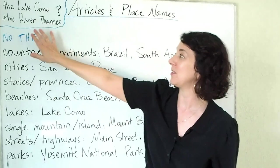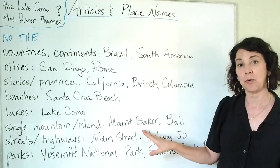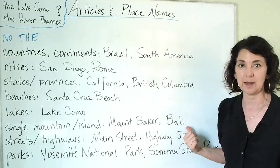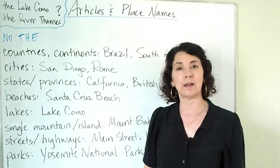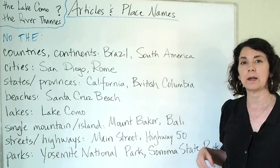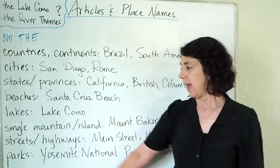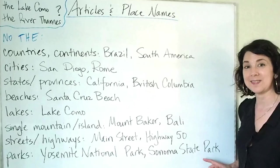No 'the' with single mountains or single islands — for example Mount Baker, or Bali, the name of an island in Indonesia. For names of streets and highways, no 'the': Main Street, Highway 50. There are some exceptions — highways named after a person can sometimes use 'the' — but usually no 'the' for streets or highways. Finally, with names of parks, such as Yosemite National Park or Sonoma State Park, no 'the.'